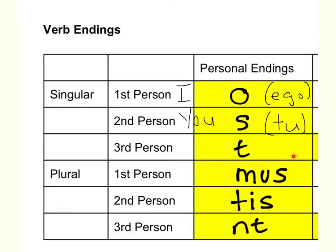In Latin, third person singular can be understood as a he, she, or it. Or it can be expressed with a singular nominative noun as a subject, such as servus or femina. Now let's move down to the plurals.